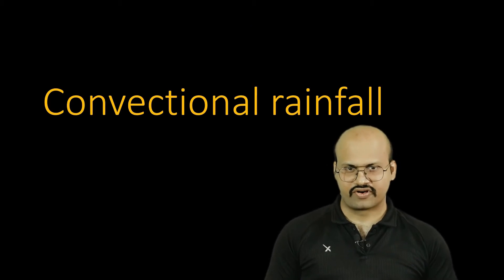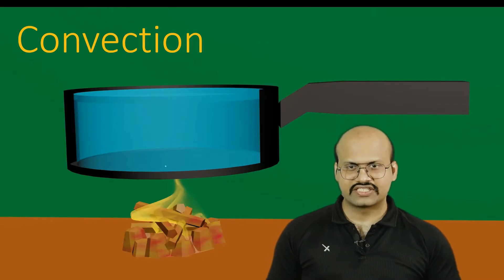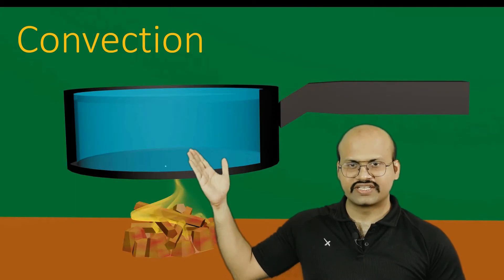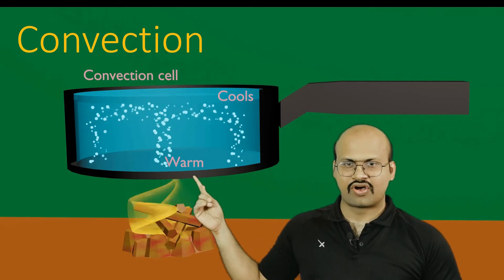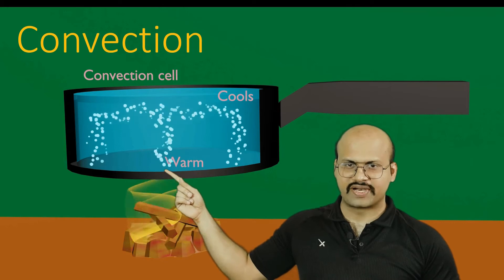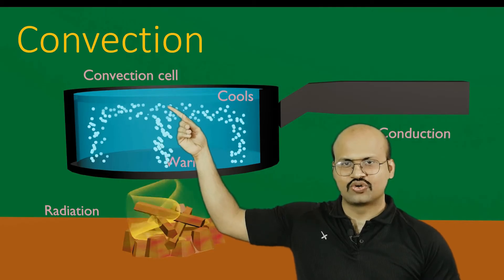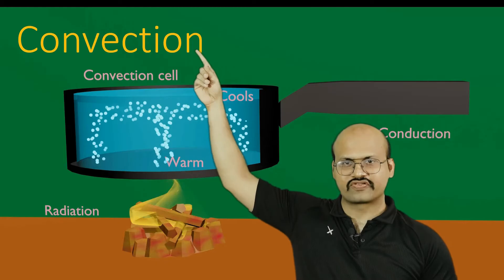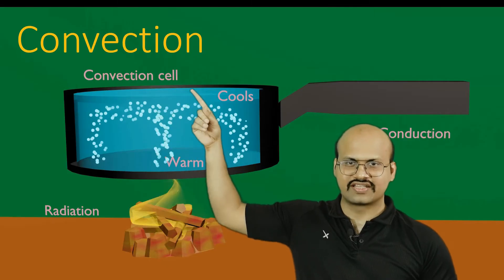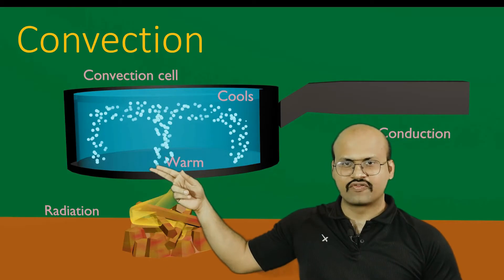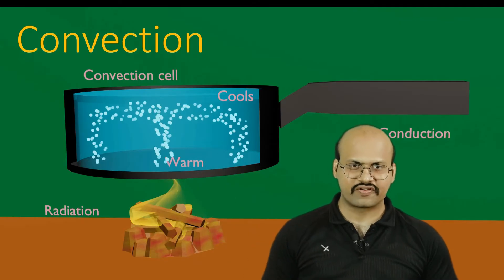The first is convectional rainfall. Before going into convectional rainfall, let's understand what the word convection means. Here we can see a utensil which has water and is being heated using a flame. This flame transfers heat to the metal of the utensil, and the water in contact with the metal gets heated. This heated water rises up and releases energy to the fluid above it as well as to the atmosphere. So heat is transferred by the movement of fluids themselves — this mechanism of heat transfer is called convection.